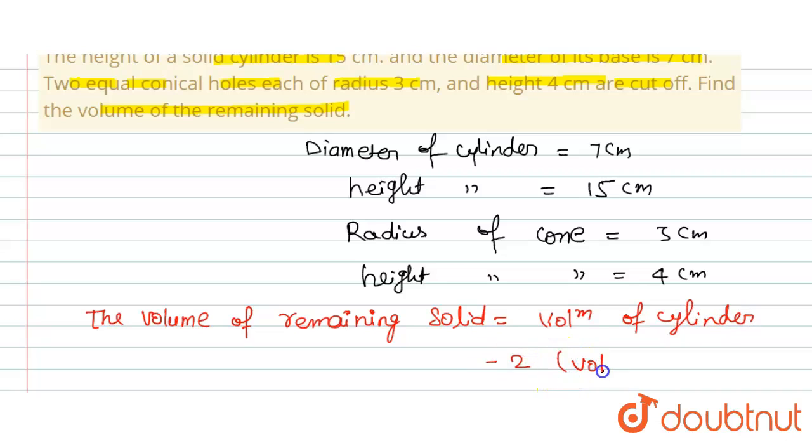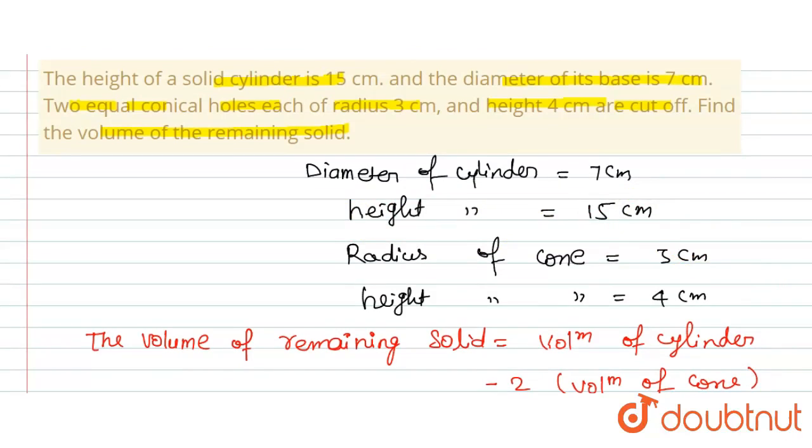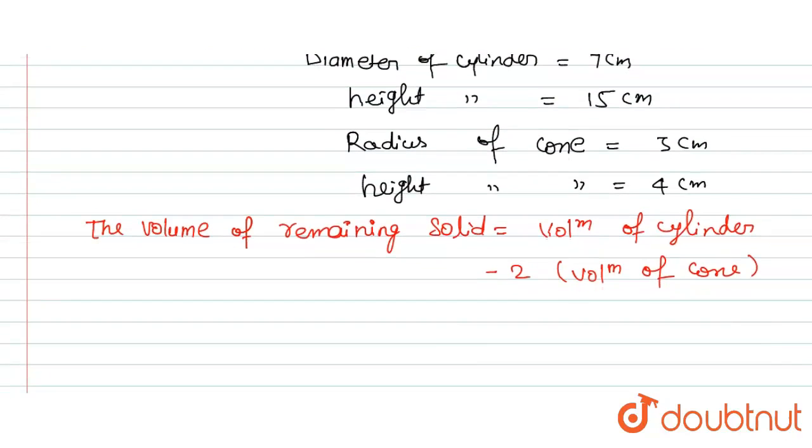times the volume of cone, because there are two conical holes, each of radius 3 centimeters and height 4 centimeters, which are subtracted from the whole volume, that is the volume of cylinder. This is